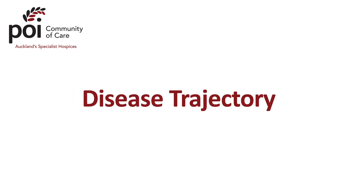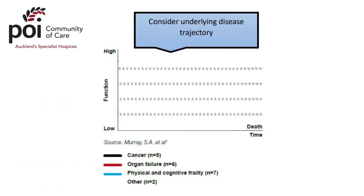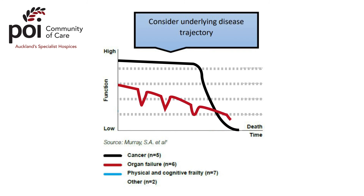Disease Trajectory describes the typical changes in functional status or AKPS over time for different illnesses. There are three main patterns. Typically for cancer, clients may be high functioning for a period of time with rapid deterioration as disease burden increases. For chronic organ failure such as heart and lung disease, the client's baseline function will deteriorate over a longer timeframe with unstable episodes, such as an exacerbation or infection, which may increase in frequency towards end of life. For clients with dementia, frailty or neurological conditions, they can have a prolonged period of fluctuating low function and high care needs.